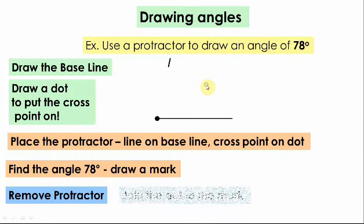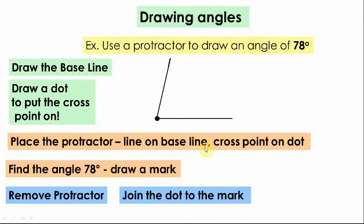After that, remove the protractor and then join the dot to the mark by this way. Now you have the angle 78 degrees. Another example.